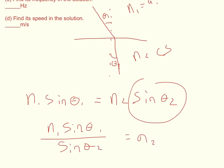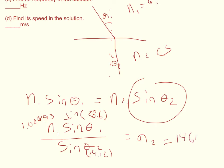You just plug in your numbers and you've got the index of refraction for this corn syrup water mixture. For N1 we assume air, which has an index of refraction of 1.000293. Multiply that by the sine of 28.6 degrees, divided by the sine of 19.12 degrees, and I get that the corn syrup water mixture has an index of refraction of 1.461869746.